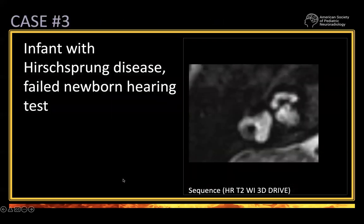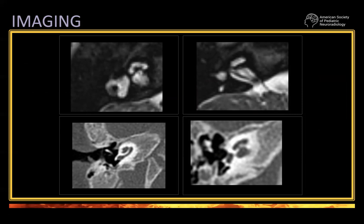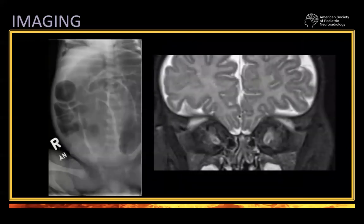Case three: this is a child with Hirschsprung disease — the abnormal dilatation of the intestine — and again, failed newborn hearing screening. Look at this cochlea on CT and MRI. Look at the characteristics of the semicircular canals — some of them are visualized here, but probably not completely normal. It's very, very important that you focus in this case on the characteristics of the cochlea and of the semicircular canals. This looks different from the cases I showed before.